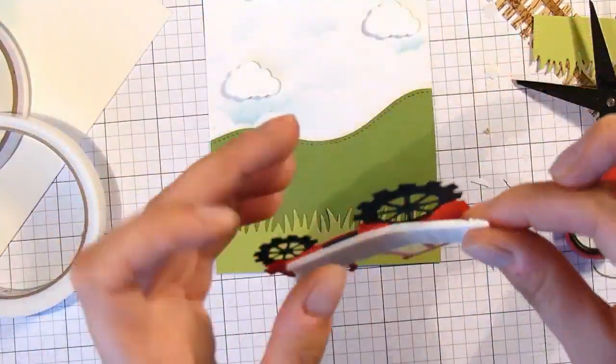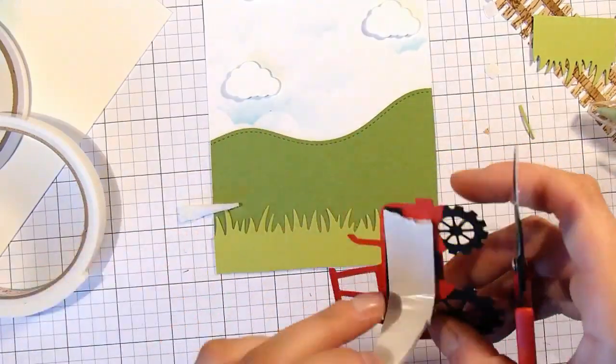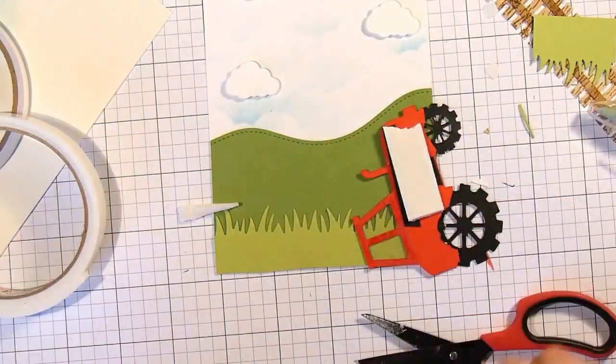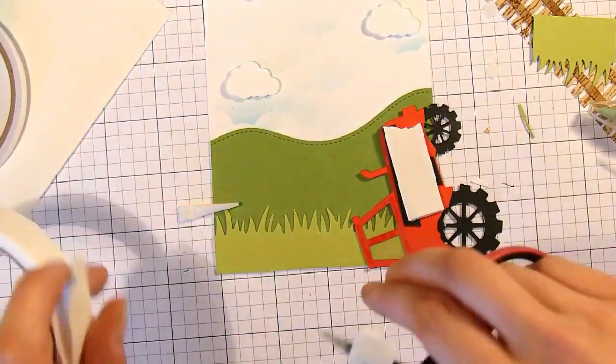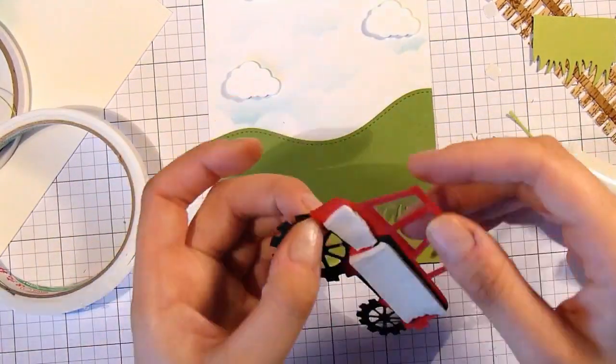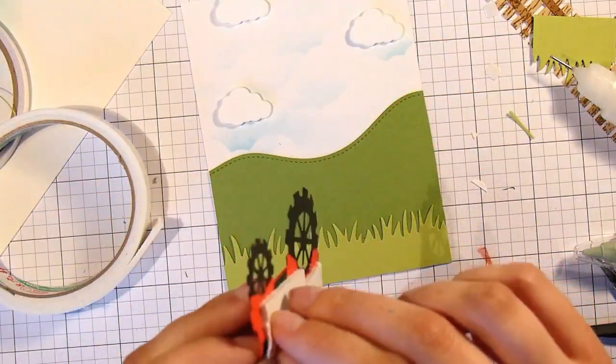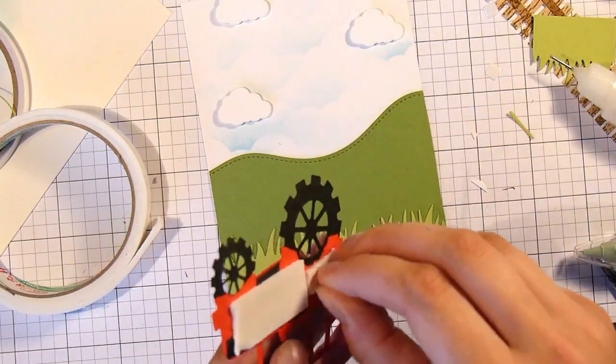Then I'm going to pop some foam tape on the back of my little tractor and I was trying to cut around the wheel here and wasn't very successful so cut the whole thing off and put another little bit of foam on.